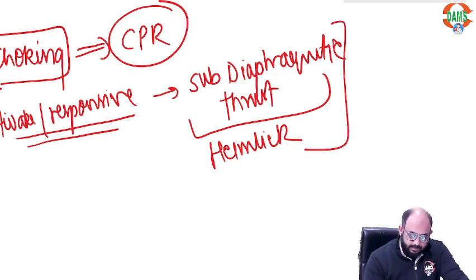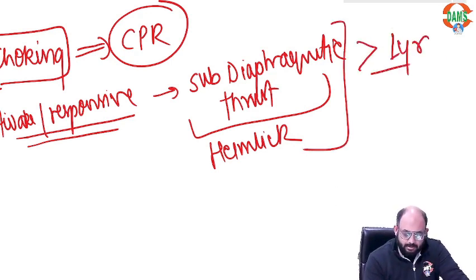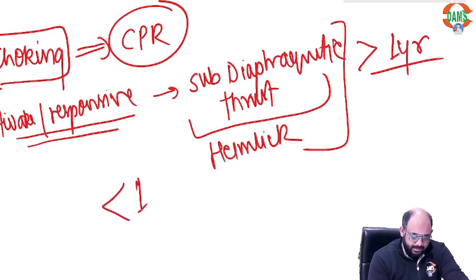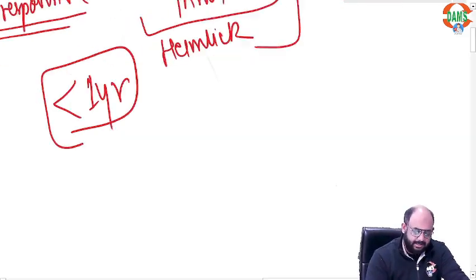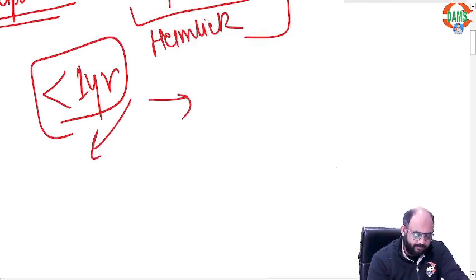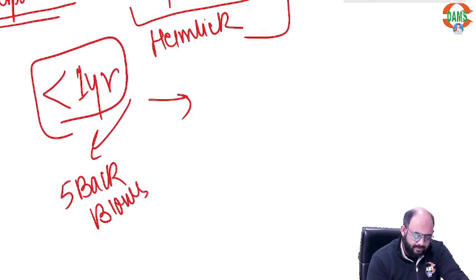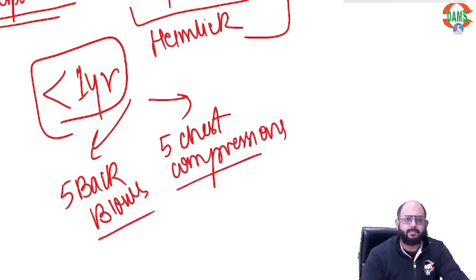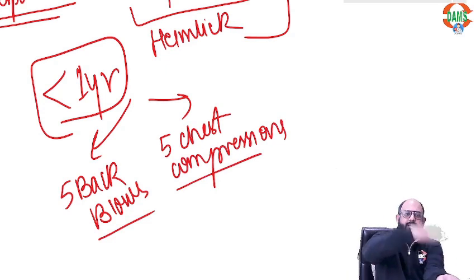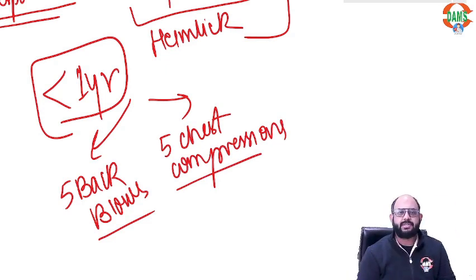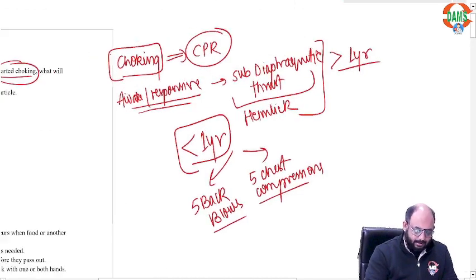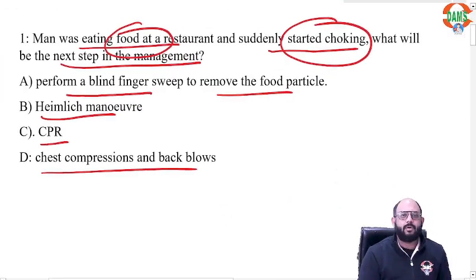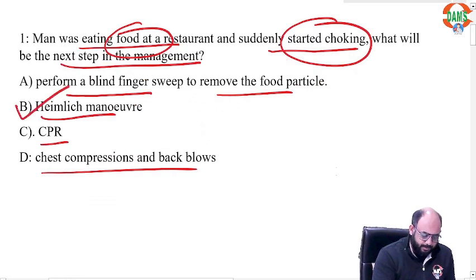This applies only if the age of the patient is more than one year. If someone less than one year chokes on food — very rare, but it can happen — then you will give five back blows followed by five chest compressions. This is the classical management of choking or foreign body obstruction in infants.